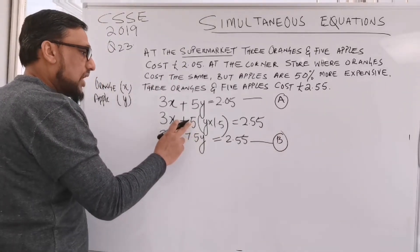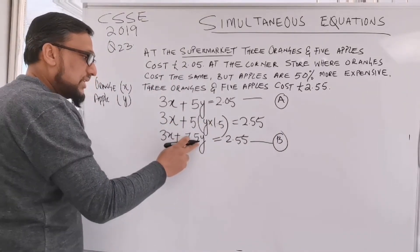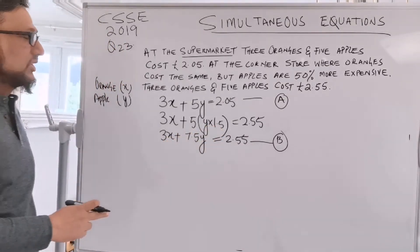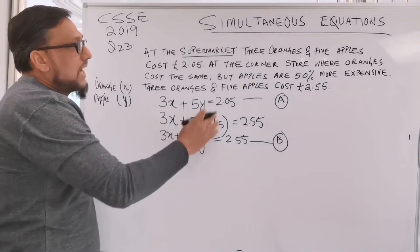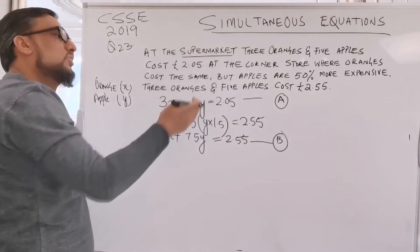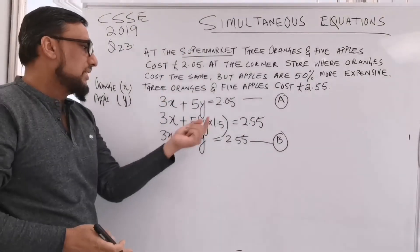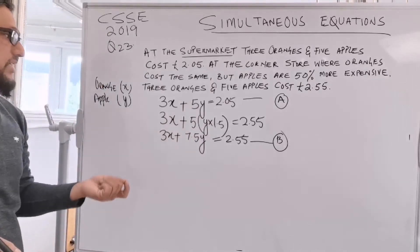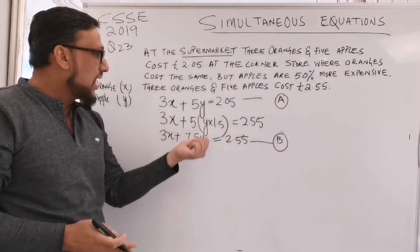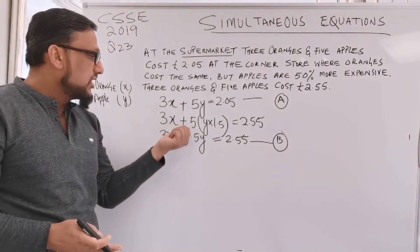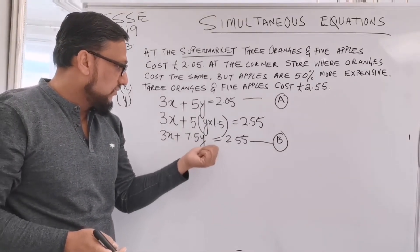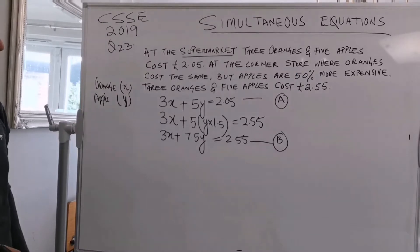If you times 5 by 1.5 you get 7.5. Why are we doing 1.5? Because the apple price is 50% more expensive than the supermarket. So 50% of 5 is 2.5 — half of 5 is 2.5 — and then added to itself, so altogether 7.5y equals 2.55.